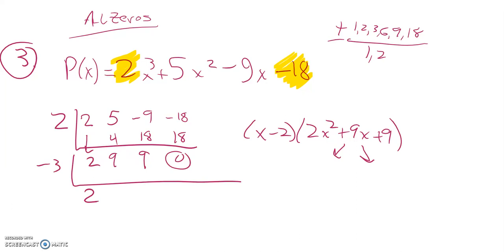So 2 comes down. Multiply. Negative 6. Add those together. I get positive 3. Multiply. Negative 9. I get 0. Great. So negative 3 worked.